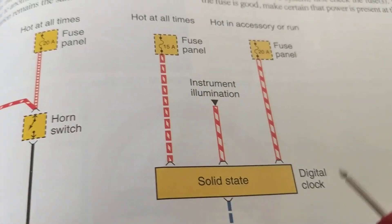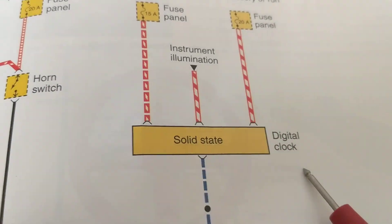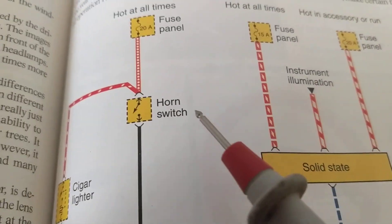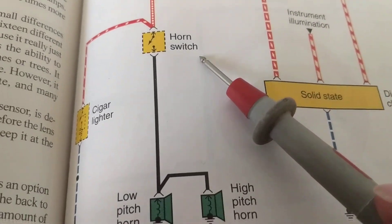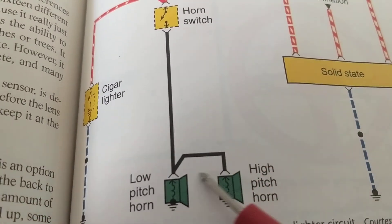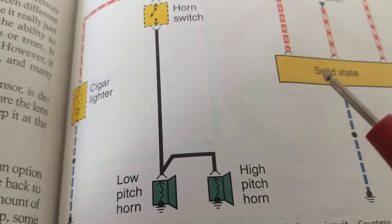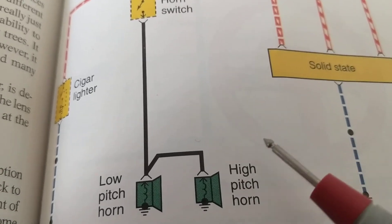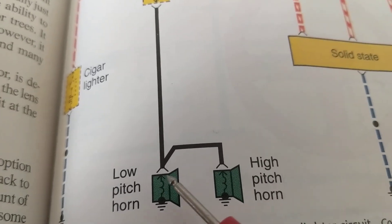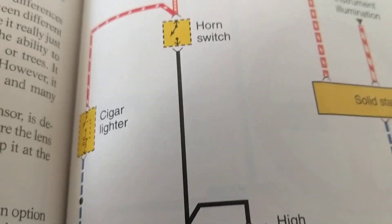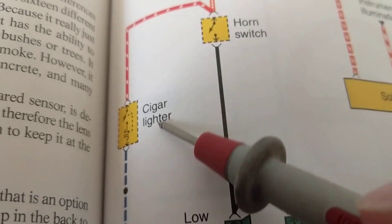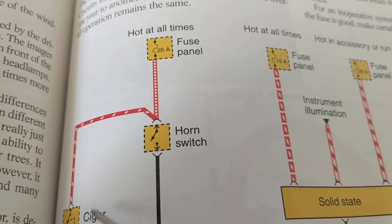You see a horn switch going to two horns — one is a high pitch horn and the other one is a low pitch horn — and a cigarette lighter through a fuse.